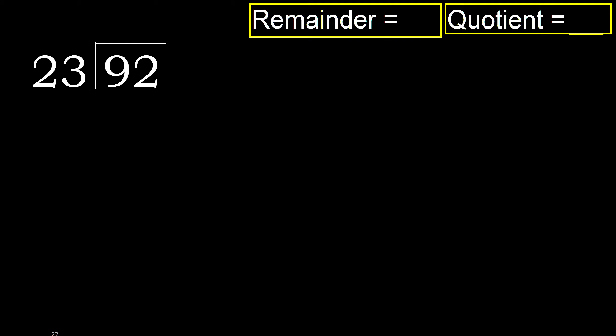92 divided by 23. 9 is less than 23, so we move to the next digit. 92 is not less than 23, so we find which number multiplied by 23 is nearest to 92 but not greater.